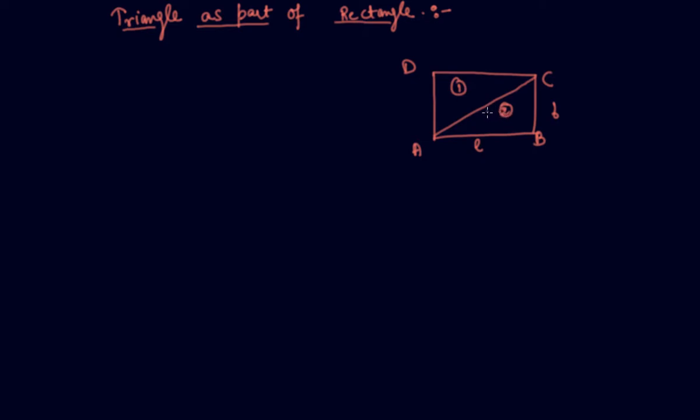So, whenever you cut the rectangle along its diagonal, you will get two triangles. What we will discuss here is this triangle as part of the rectangle. So, if I am asked to find out the area of each triangle,